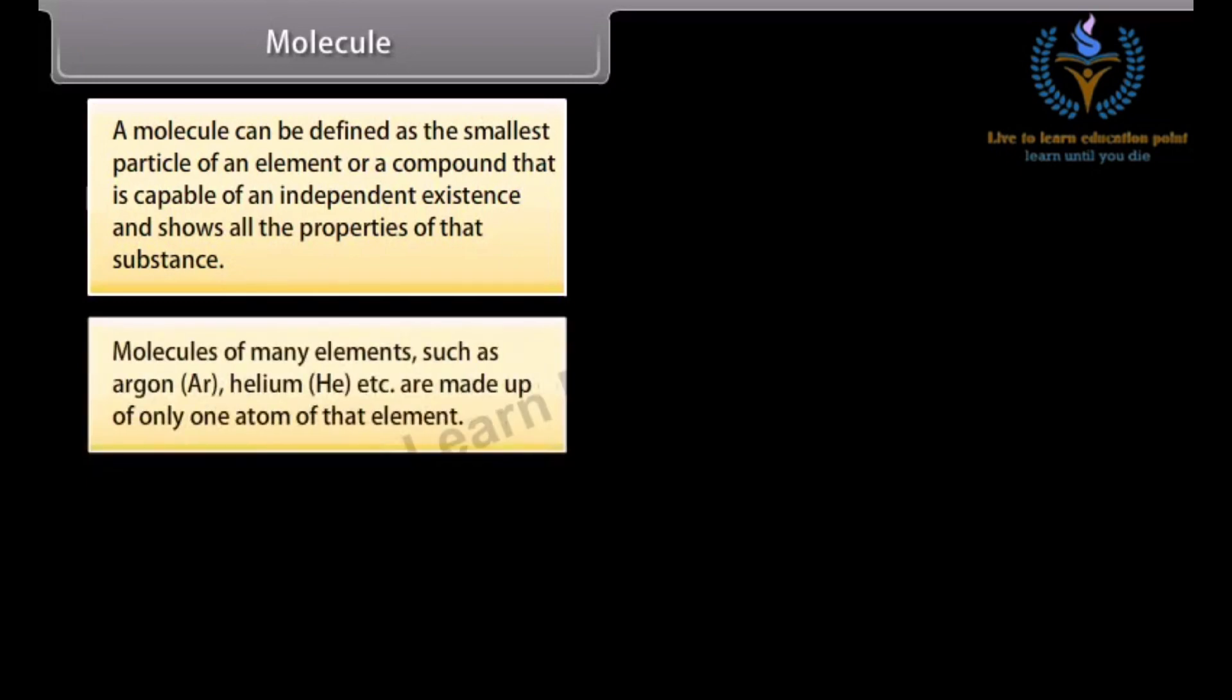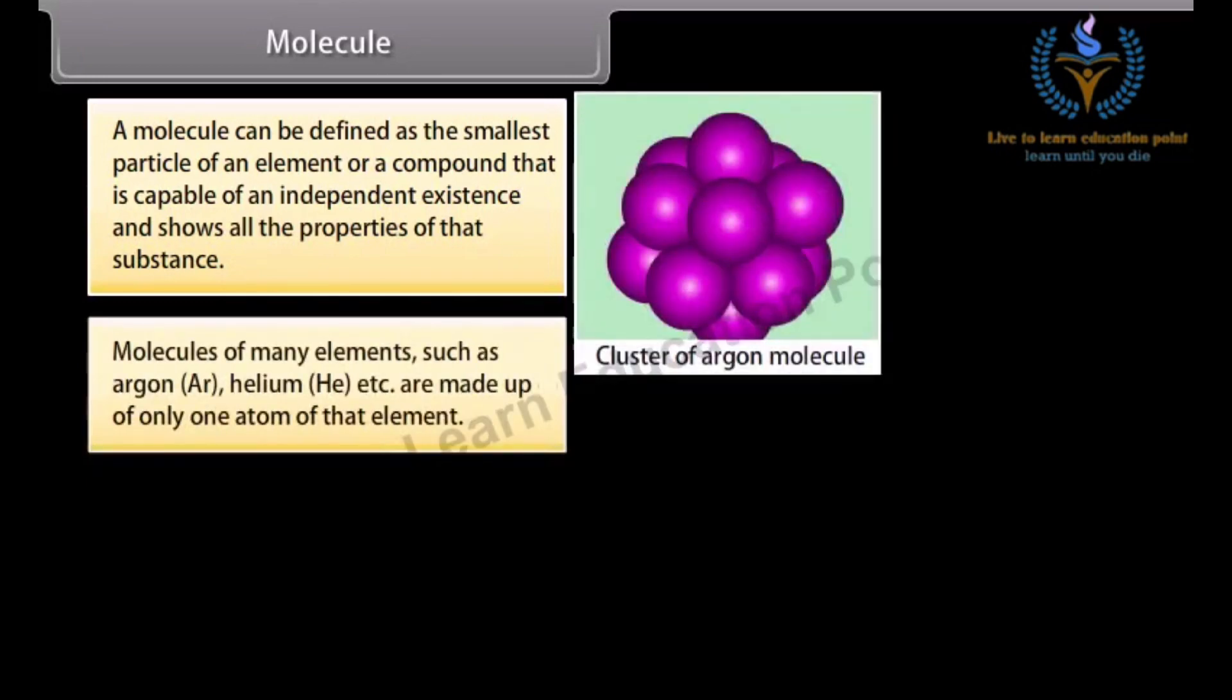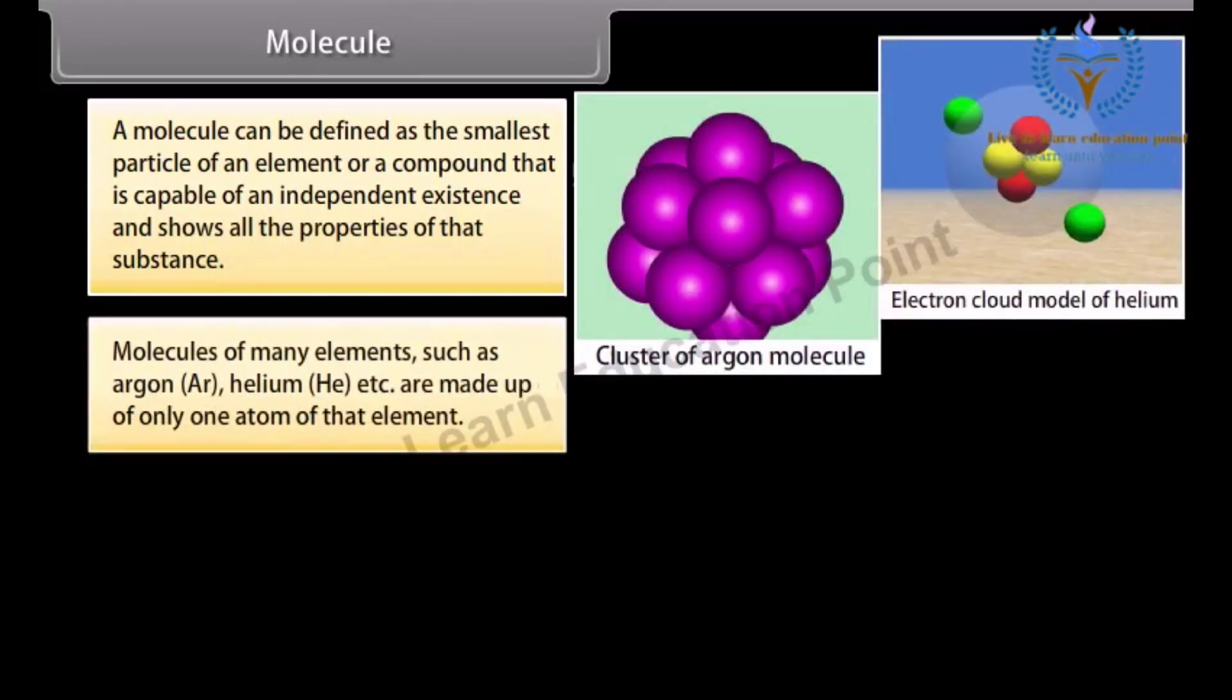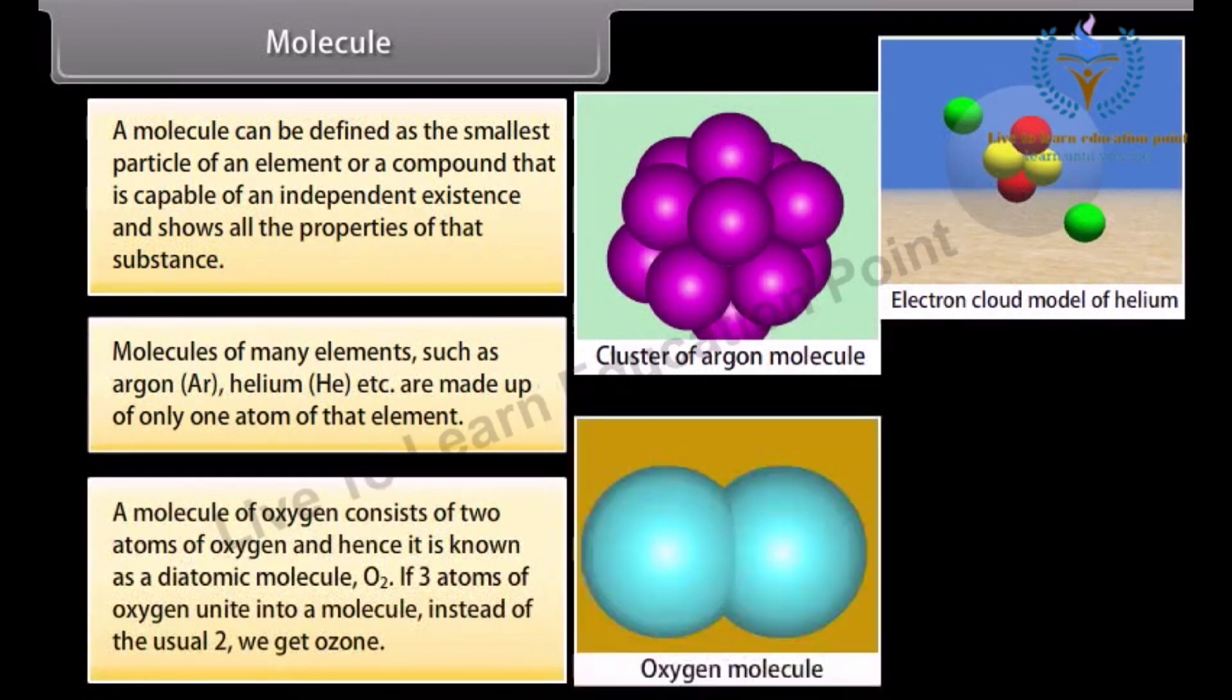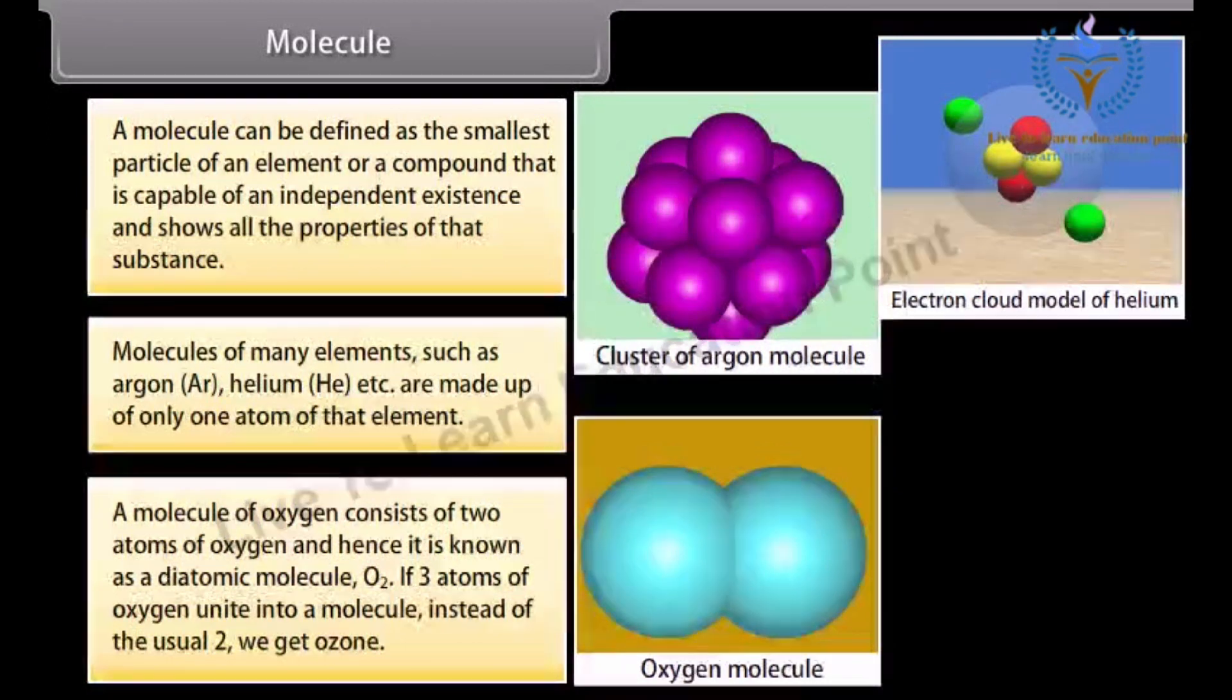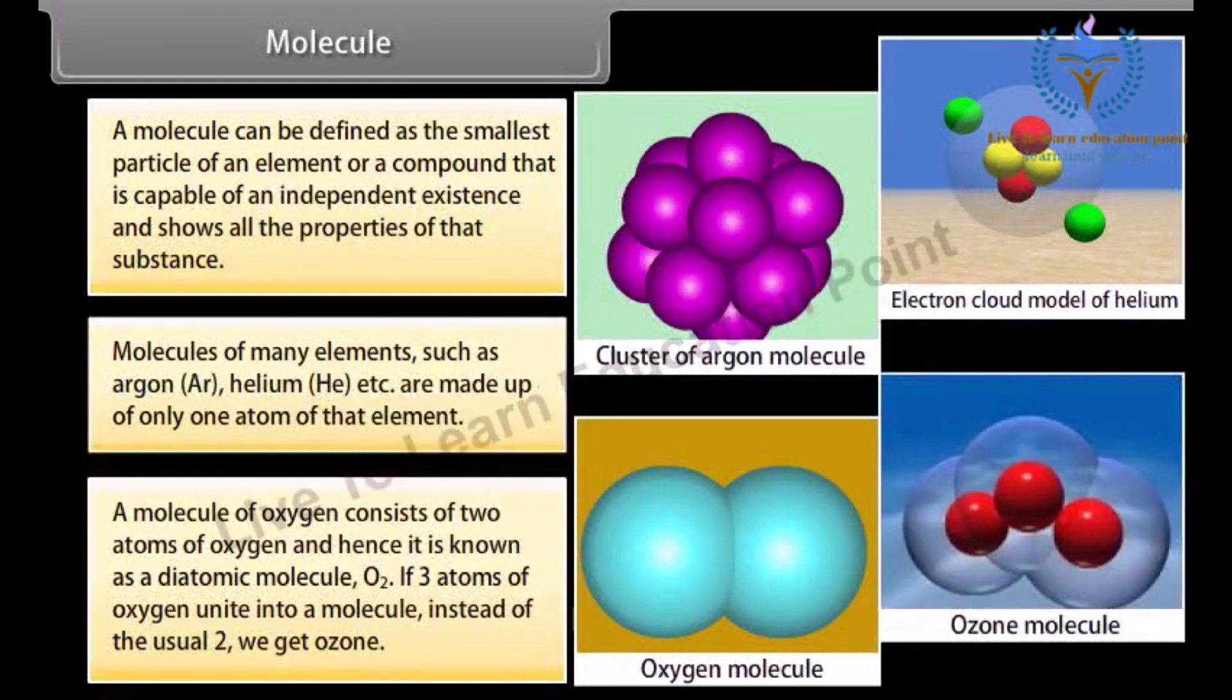Molecules. Molecules of many elements such as Argon Ar, helium, etc. are made up of only one atom of that element. A molecule of oxygen consists of two atoms of oxygen and hence it is known as a diatomic molecule O2. If three atoms of oxygen unite into a molecule instead of the usual two, we get ozone.